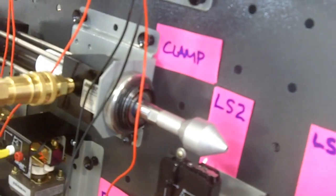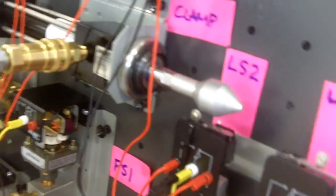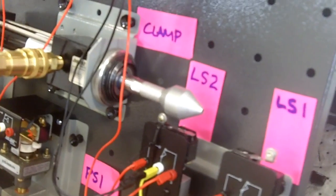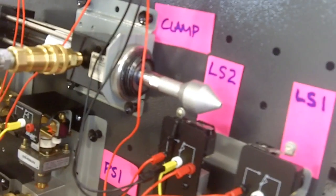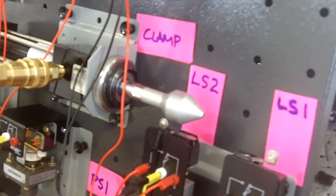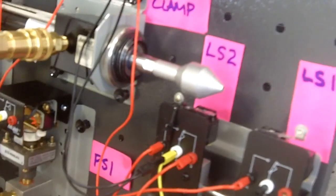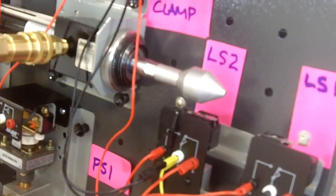However, when our clamp cylinder extends, our normally open being held closed should open, and via the mechanical interlock, the normally closed switch being held open should close. That's not going to happen, okay?